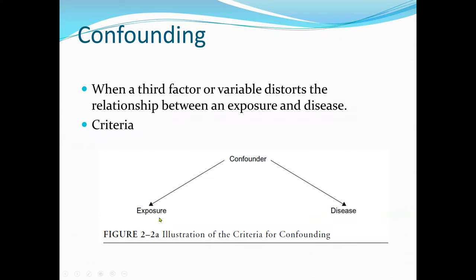Next we move to confounding variables. A confounding variable is present when a third factor or variable distorts the relationship between an exposure and the disease. The distortion can take the form of an error that inflates or deflates the strength of association between the exposure and disease.